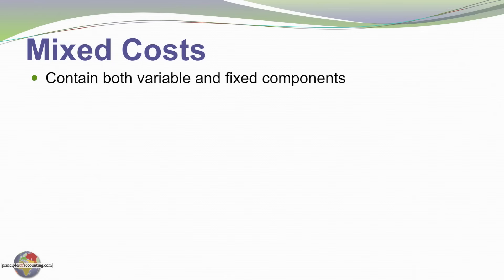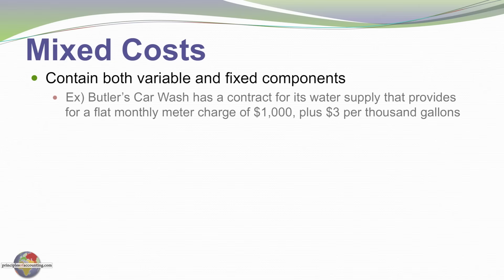Now, some costs are not strictly fixed or strictly variable. They are mixed in nature. Let me illustrate the concept of a mixed cost with a very simple and clear example. Butler's Car Wash has a contract for its water supply that provides a flat monthly fee of $1,000 per month plus $3 for each thousand gallons of water that are used.